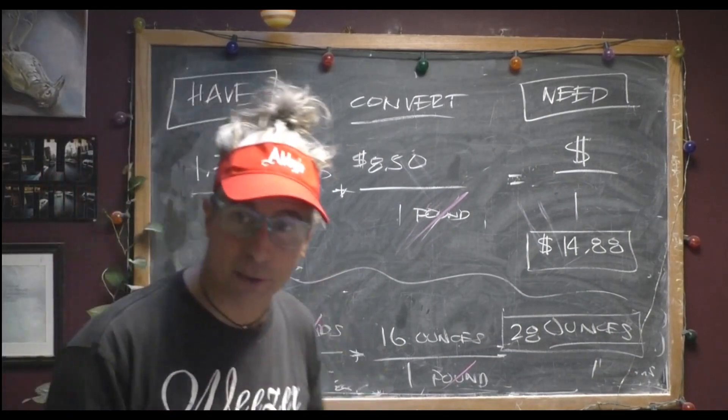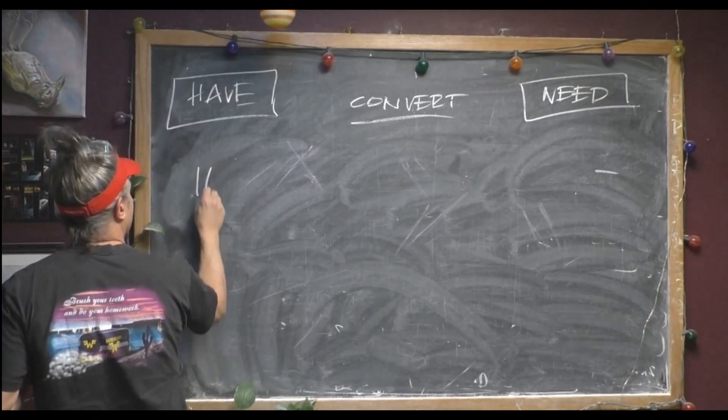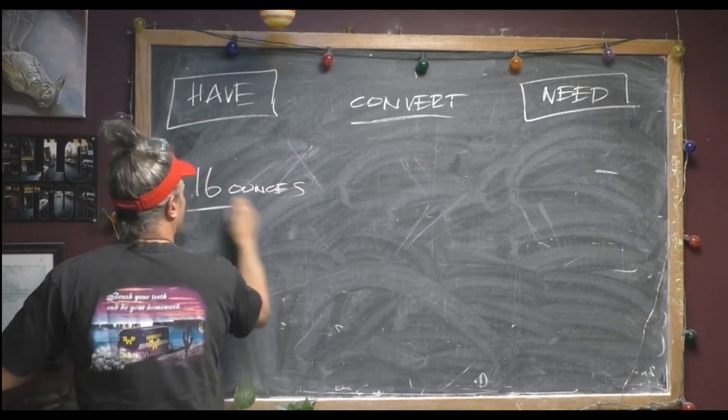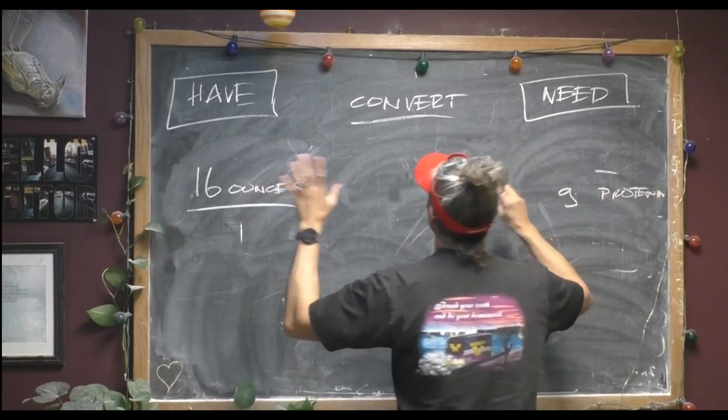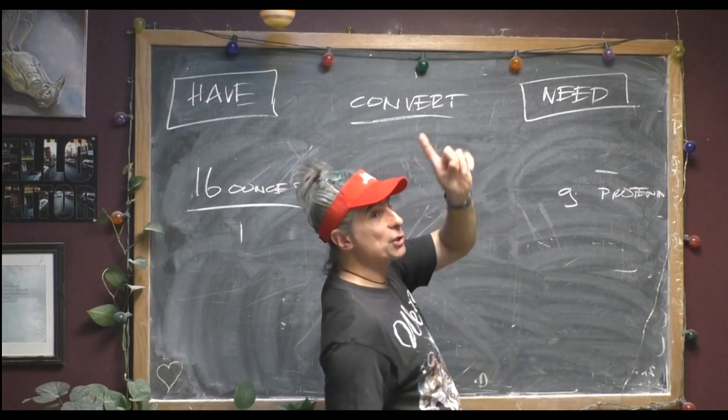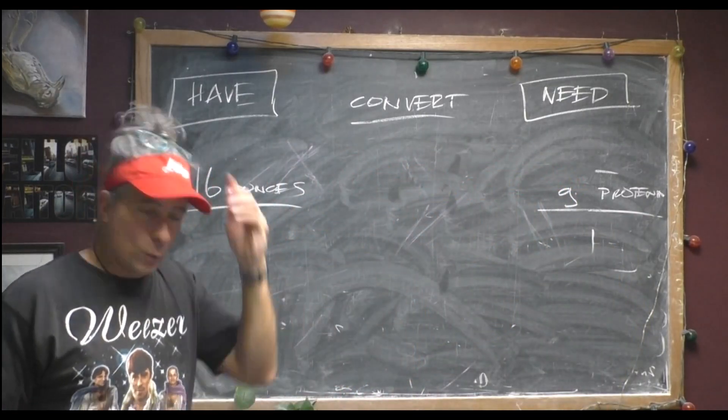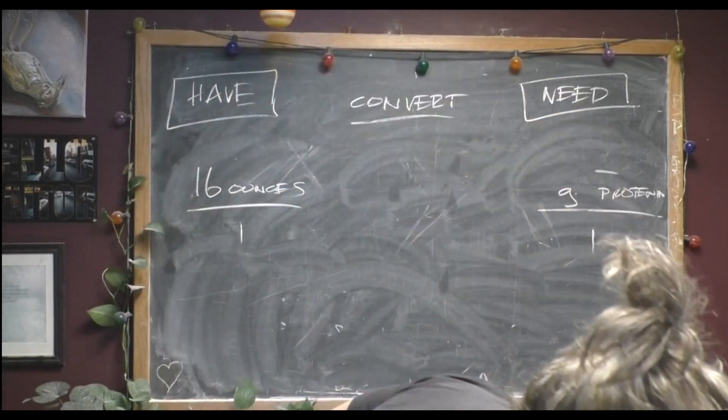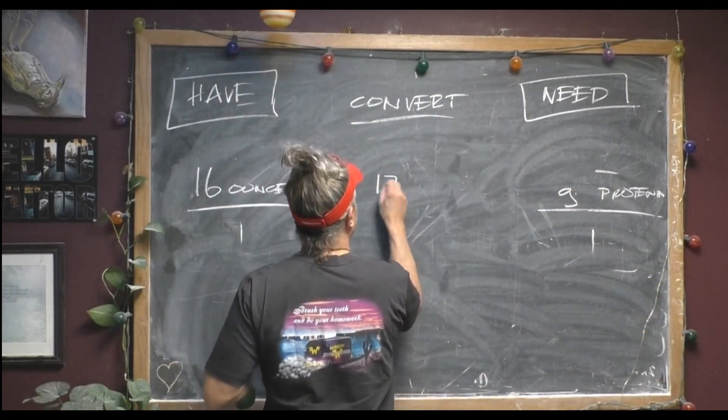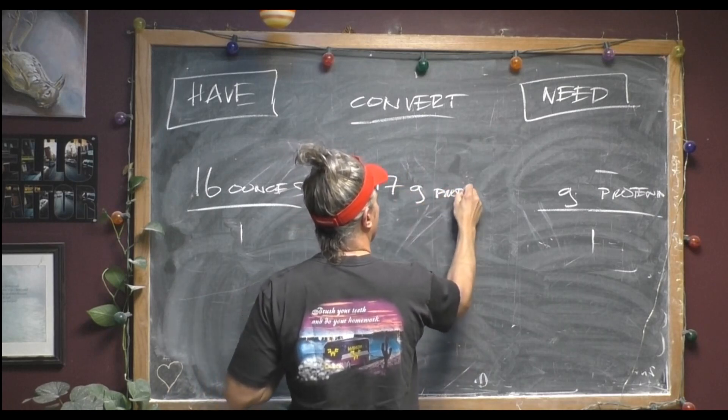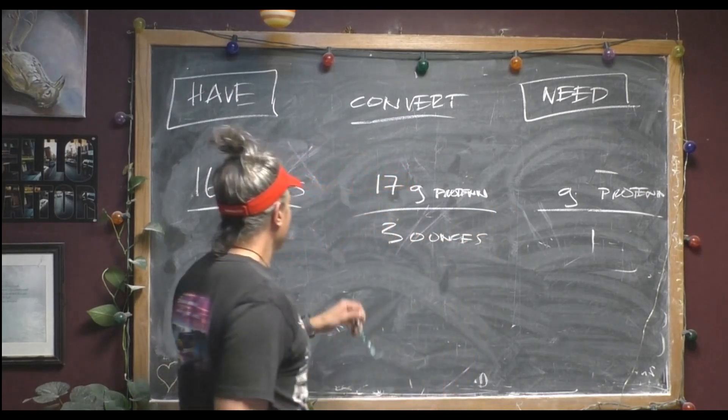Let me clear the board real quick. So we know a pound is 16 ounces. And we know we want to know how many grams of protein are in a pound. The package is 28 ounces, and we'll come back to that in a second. So we need to know how many grams of protein there are. Well, according to my little link I just saw, there are 17 grams of protein in three ounces of Atlantic salmon.